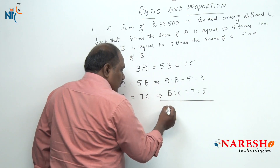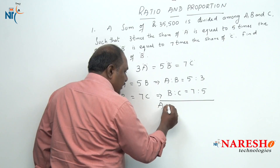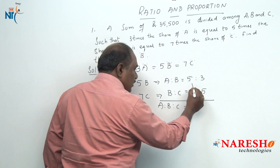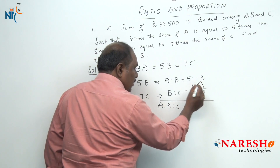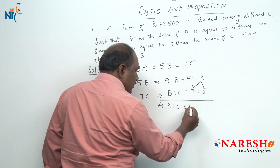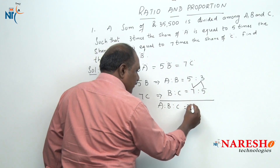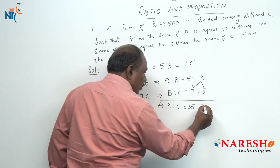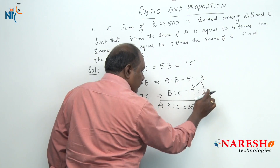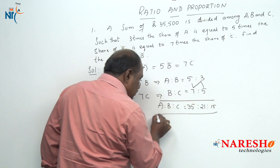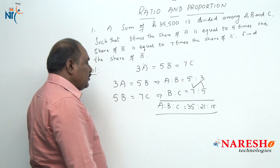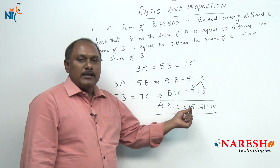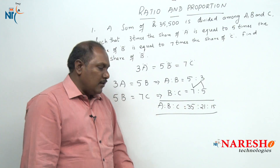So, what is A is to B is to C? Using the reverse-end method: 5 into 7 is 35, 7 into 3 is 21, 3 into 5 is 15. So the money should be divided in the ratio of 35 is to 21 is to 15.